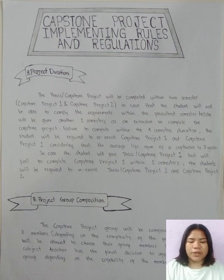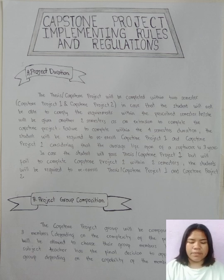The Capstone Project group will be composed of at most three members depending on the complexity of the project. The student will be allowed to choose their group members, but the subject teacher has the final decision to approve the group depending on the capability of the members.